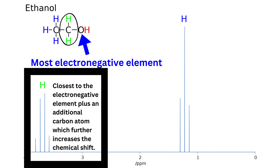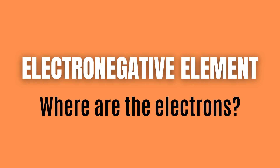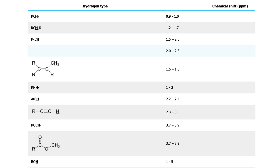The logical next question if you are a chemistry newbie is: what is an electronegative element? Well, it is actually quite straightforward — simply ask yourself where are the electrons. There are also tables for different elements that state their electronegativity and even their chemical shift outright.